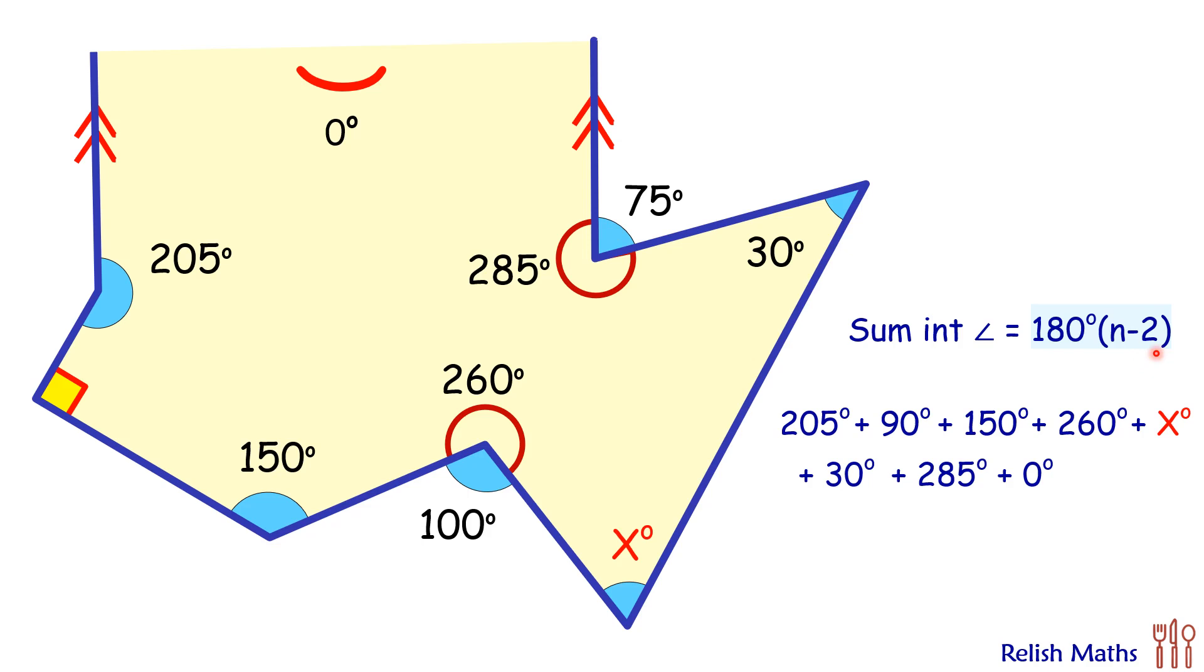So here n is 8, that's the number of sides. So this will be equal to 180 times 6. Solving it, we'll get 1020 plus x equals 1080, and x is 60 degrees.